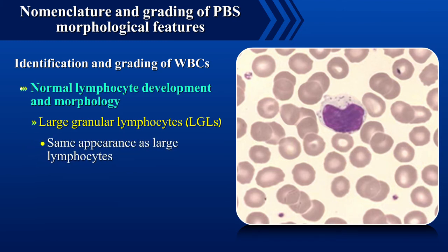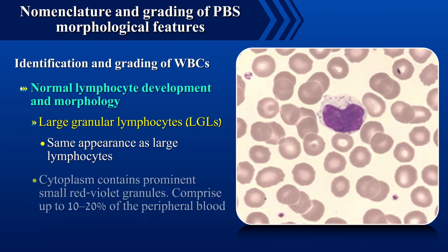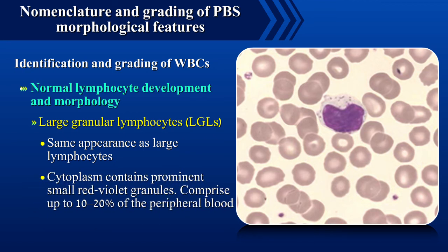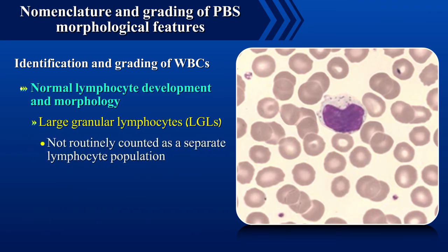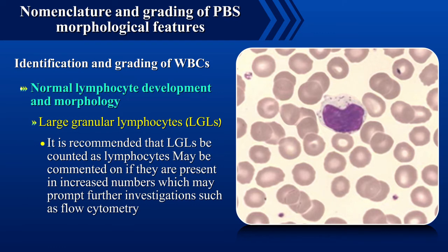Large granular lymphocytes, also called LGLs, are of the same appearance as large lymphocytes but the cytoplasm contains prominent small red to violet granules. These cells can comprise up to 10 to 20% of peripheral blood lymphocytes in normal subjects. It is recommended that LGLs be counted as lymphocytes but may be commented on if present in increased numbers, which may prompt further investigations such as flow cytometry.